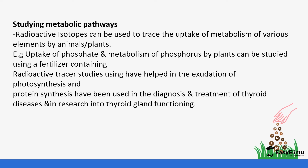The uptake of phosphate is tracked using a fertilizer containing a radioactive tracer, which has helped in understanding photosynthesis and protein synthesis. A radioactive tracer is placed in the fertilizer, and when the fertilizer is applied to the plant, researchers can trace how the radioactive material moves and observe the movement of ions and metabolic components through the plant.